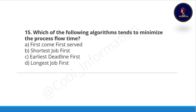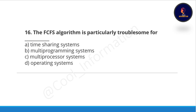Question fifteen: which of the following algorithms tends to minimize the process flow time? Options are: first come first serve, shortest job first, earliest deadline first, and longest job first. The correct option is option B, shortest job first.